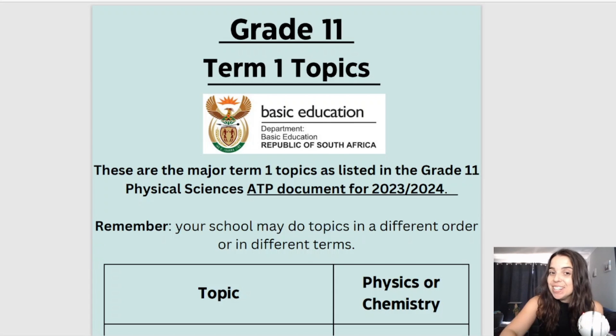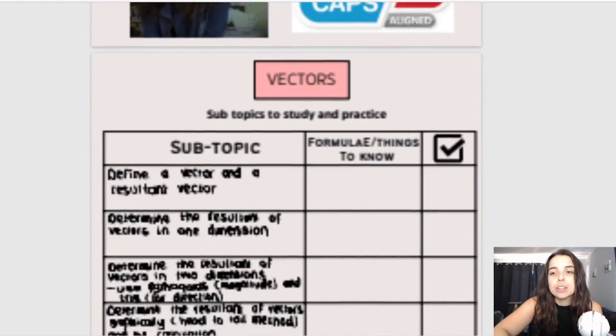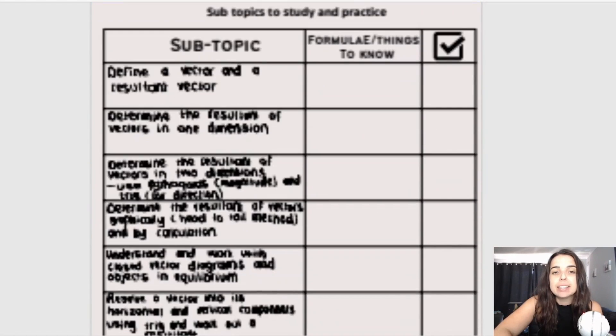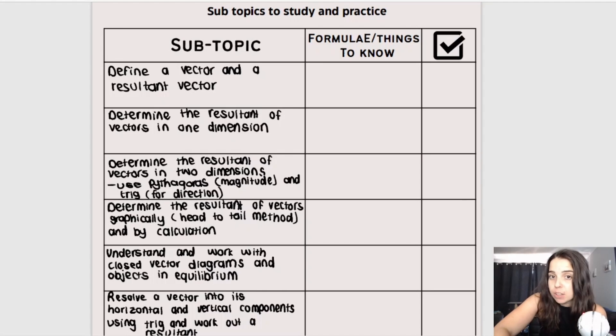Now as I mentioned, this document that you see on the screen behind me is a free document that I created for you. You can access it via my website missmartins.co.za and if I scroll down in this document, you can see that I set it up basically like a checklist. So what I did is I created a format where I list the subtopics for each big topic, I list formulas and things to know if there are any that are applicable and then I've given a little tick column.